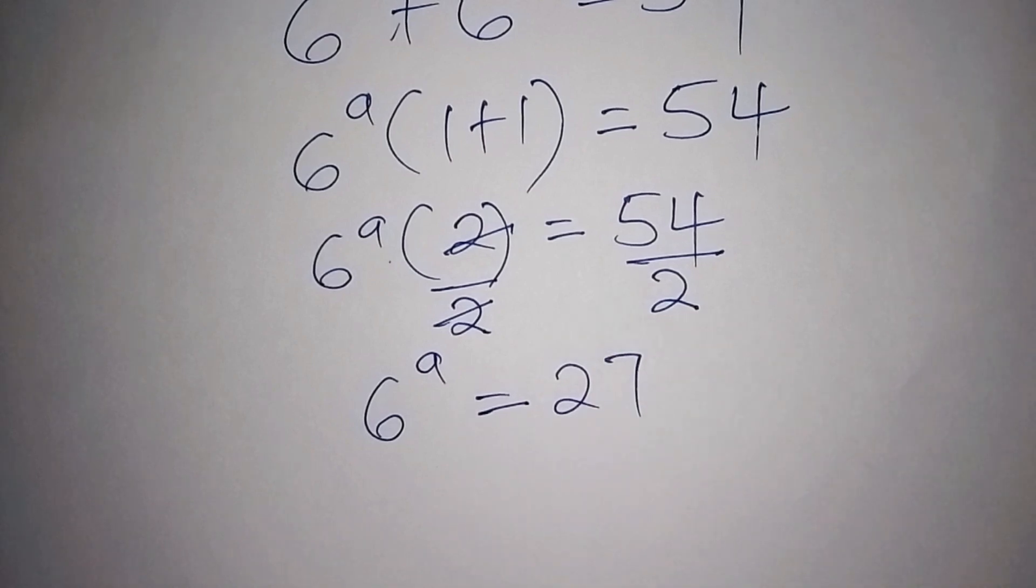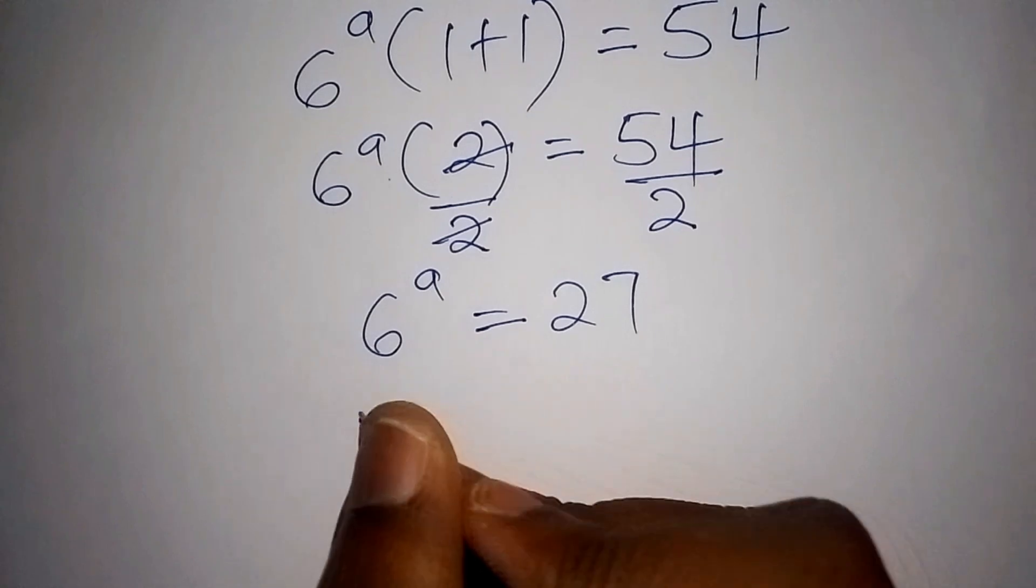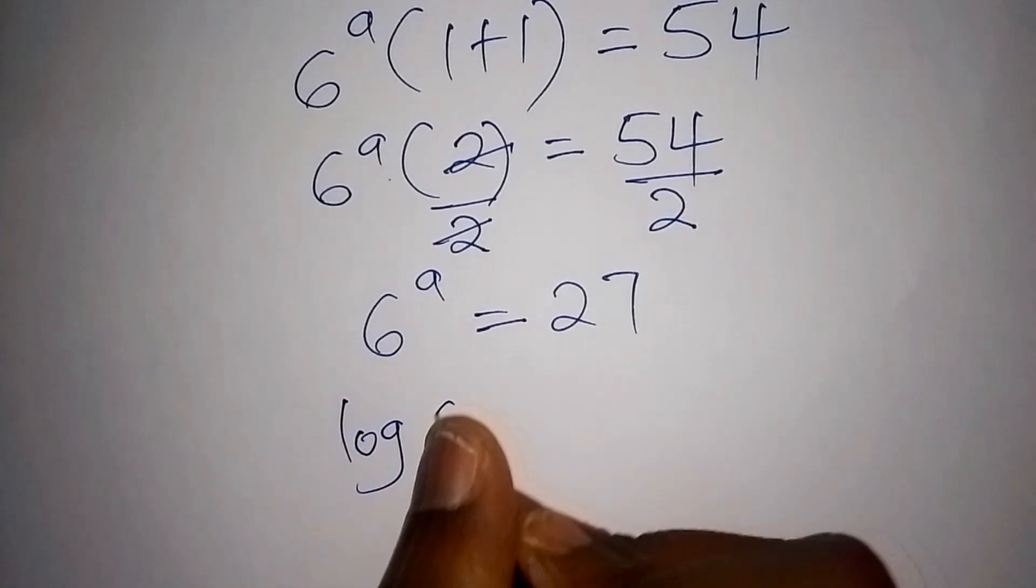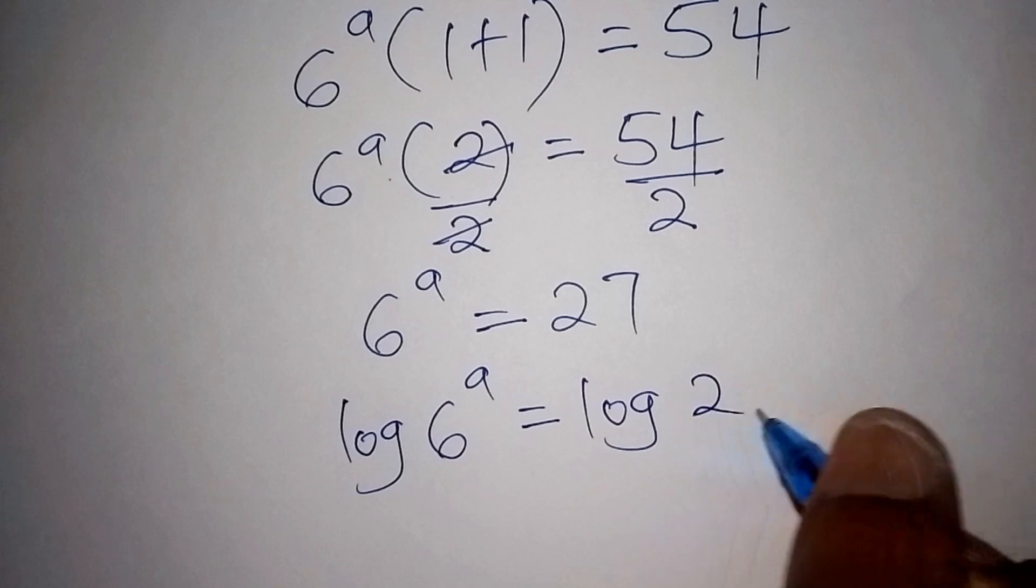So from there we shall now find the value of a. We can find the value of a by introducing the log. So now we shall have the log of 6 to the power of a equals the log of 27.